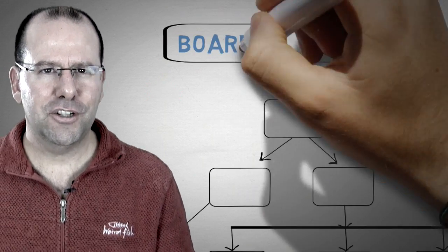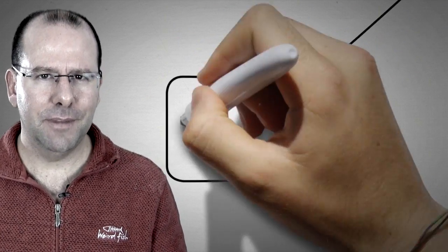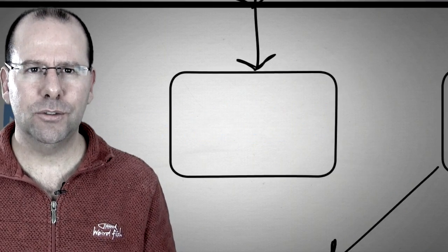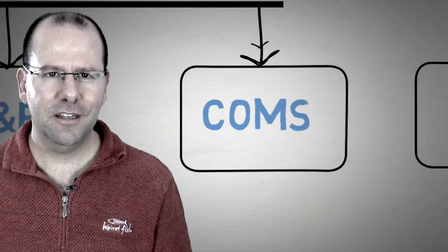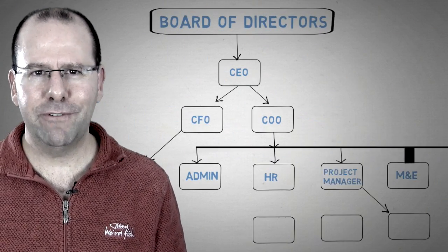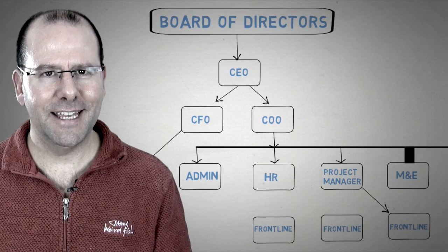The organization structure might include senior management and leadership, an operations team that includes finance, admin, human resources, project managers that get things done, monitoring and evaluation staff, communications officers, a resource mobilization team or fundraisers, and frontline implementers that are getting things done.